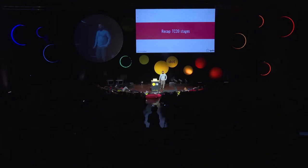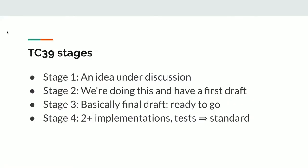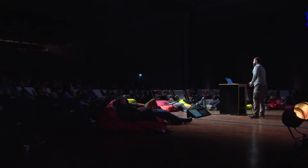To recap the TC39 stages: at stage one, we're talking about an idea in the committee openly and with the community, but we haven't really decided much of anything. At stage two, we've decided we're going ahead with this feature and we have a first draft. At stage three, we have a pretty final draft — we've talked through all the semantics and done all we can before it's time to implement it. Even before stage three, there are often early prototype implementations like polyfills or transpilers. After stage three, proposals are often implemented in web browsers or Node with higher stability requirements. At stage four, we have two or more implementations and a shared test suite between all JavaScript engines, so it's ready to go into the standard.